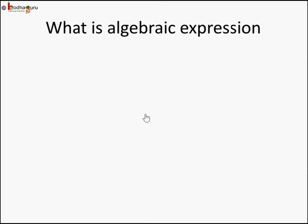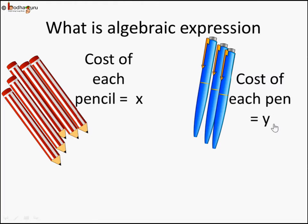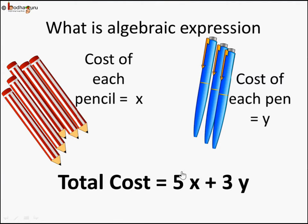Now let us also revise what is an algebraic expression. So let us say we are given 5 pencils and the cost of each pencil is X rupees — we do not know the price right now. And we are given 3 pens and the cost of each pen is Y rupees. The total cost would be 5 into X plus 3 into Y. 5 pencils each at X rupees, so 5X is the cost of pencils, and 3 pens at Y rupees each, so 3Y is the cost of pens. The total cost is 5X plus 3Y.